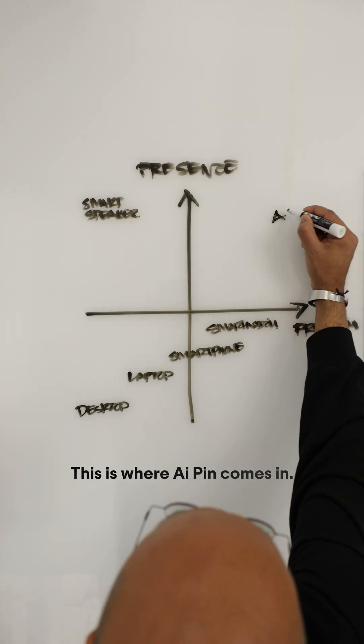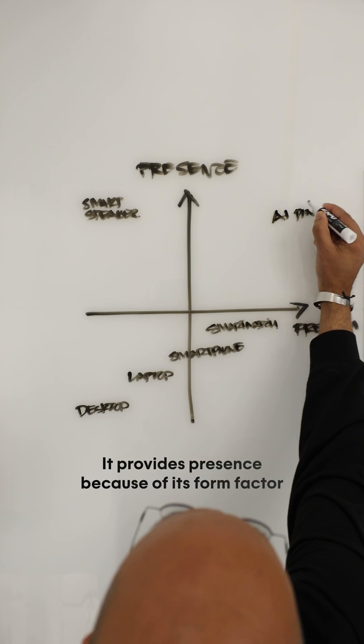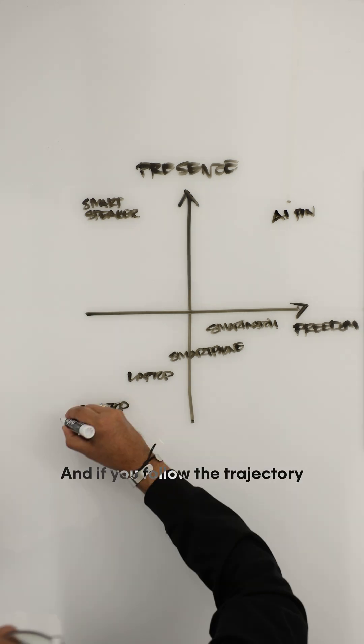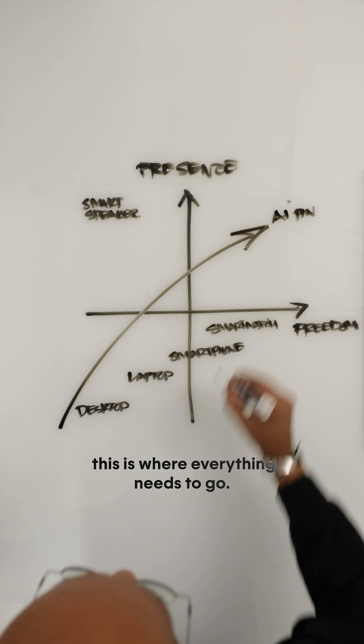This is where AI Pin comes in. It provides presence because of its form factor and greater freedom because of its automated operating system. And if you follow the trajectory, this is where everything needs to go.